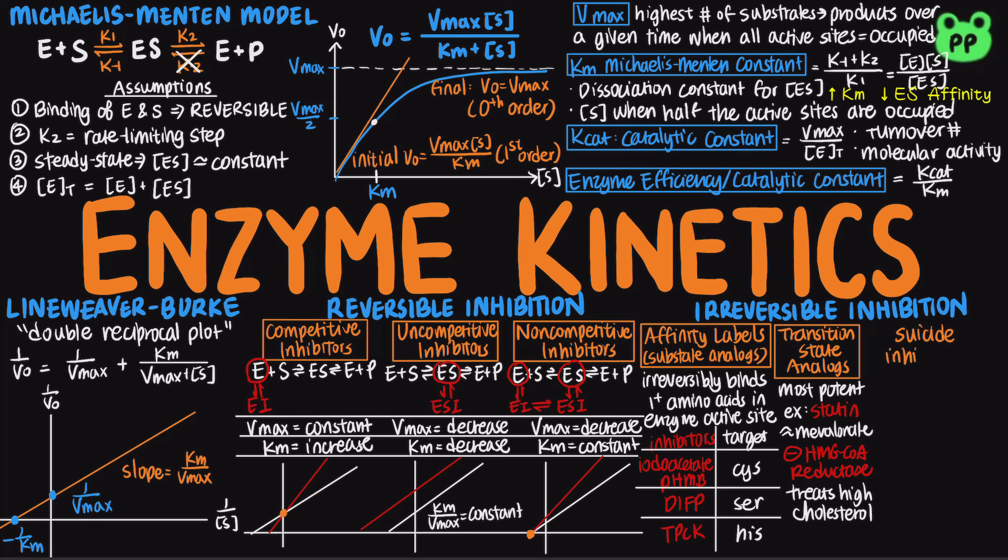The third type of irreversible inhibitor is the mechanism-based suicide inhibitors, which are substrate analogs that bind active site and initiate catalytic process as if they were a normal substrate. Somewhere down the pathway, a reactive intermediate is formed that modifies the residue on the active site covalently, hijacking the normal enzyme reaction mechanism. Suicide inhibition is another target for drug design.